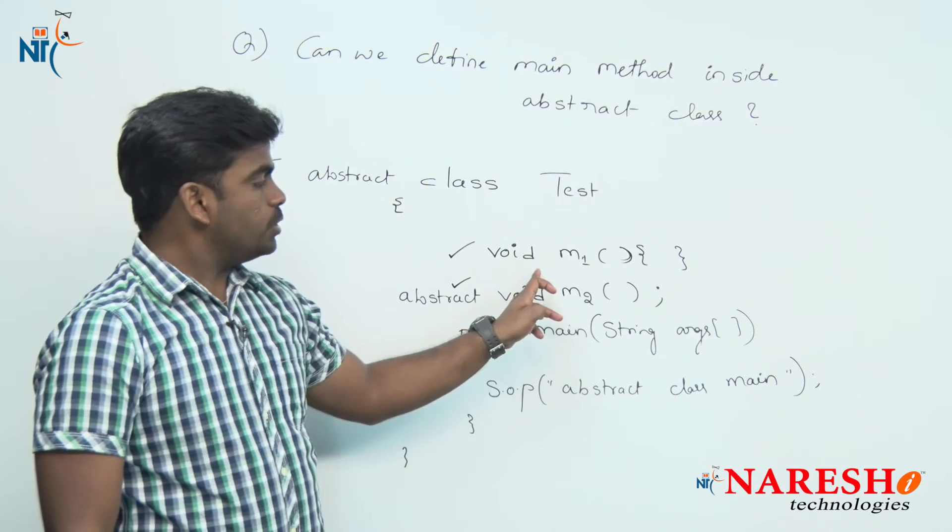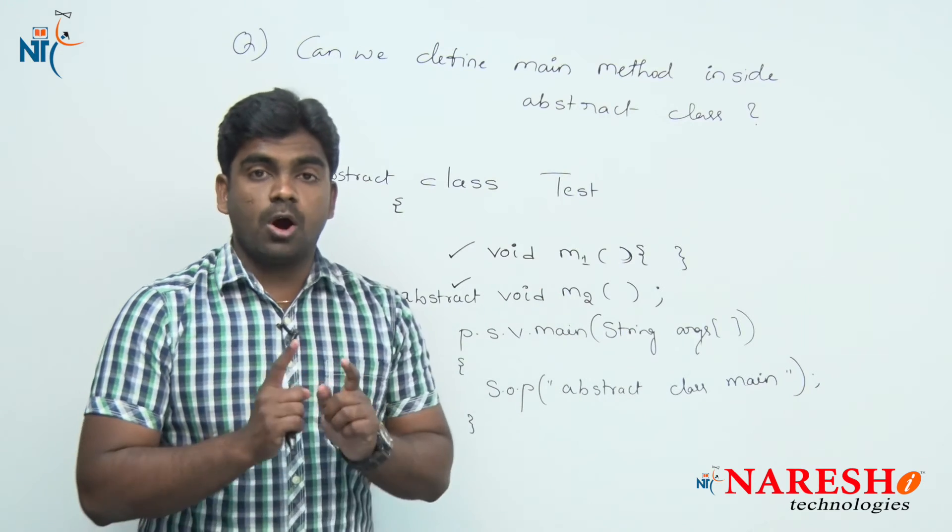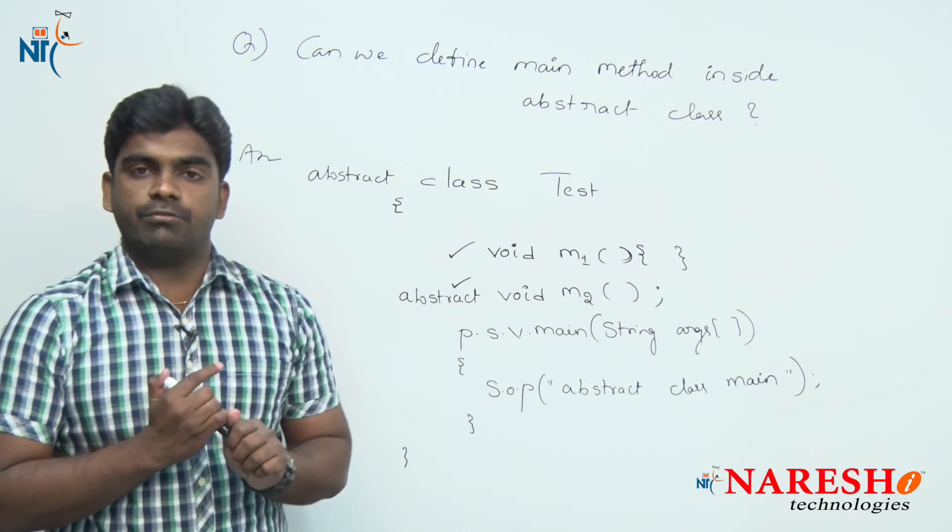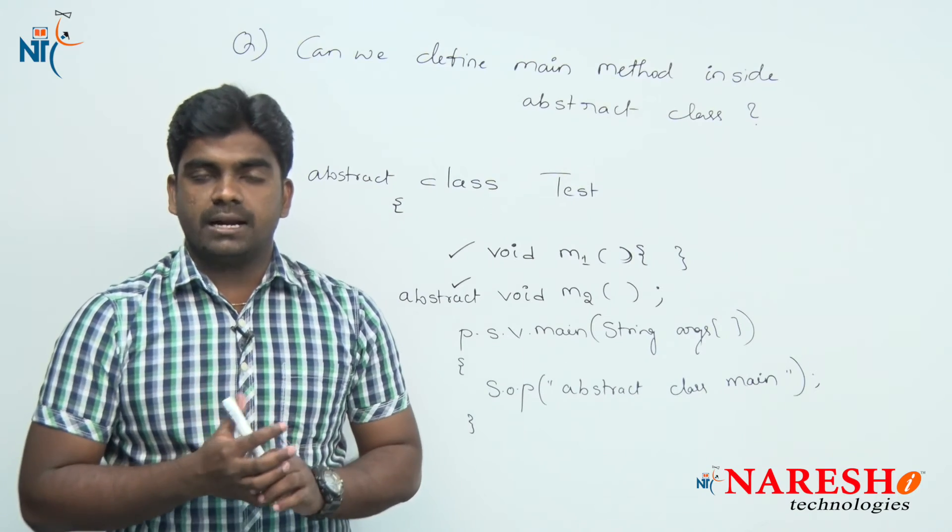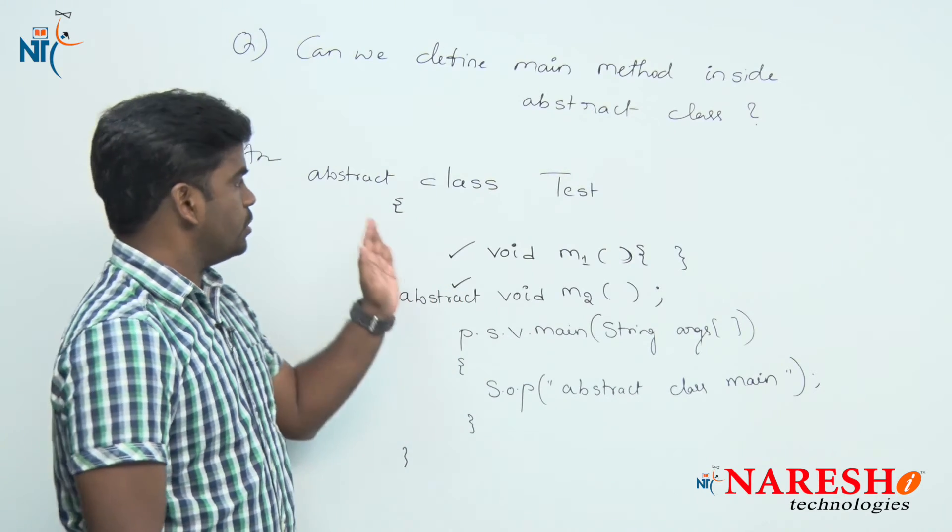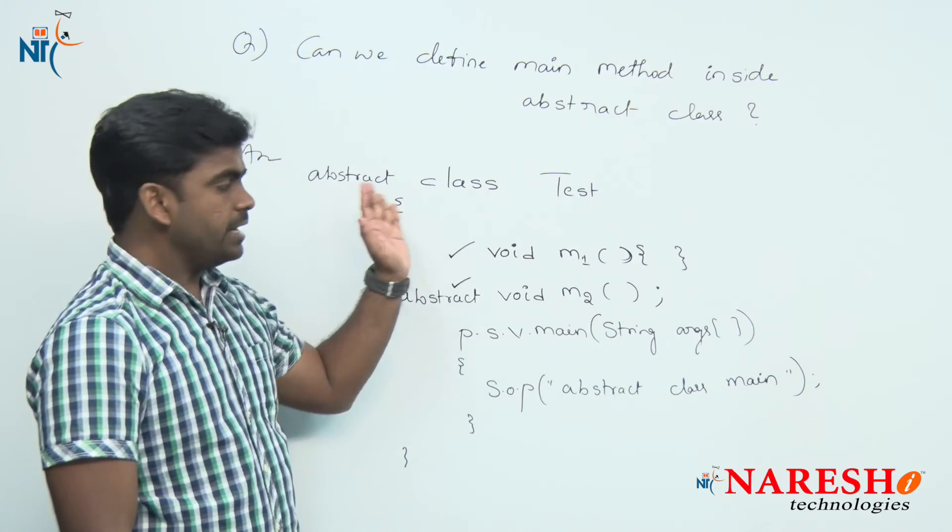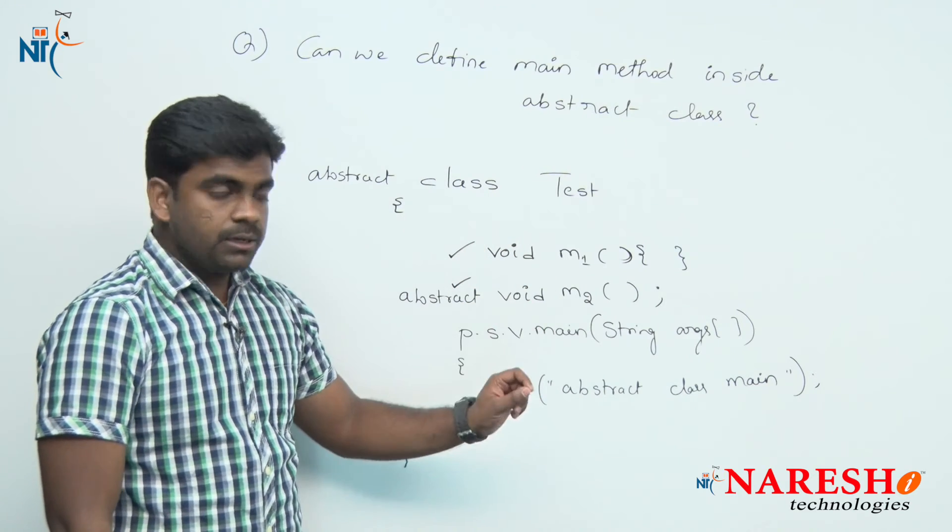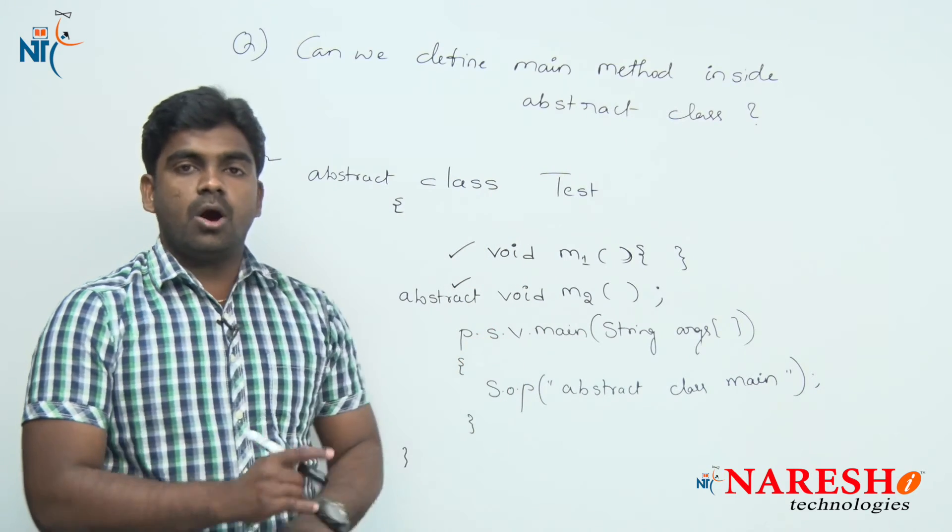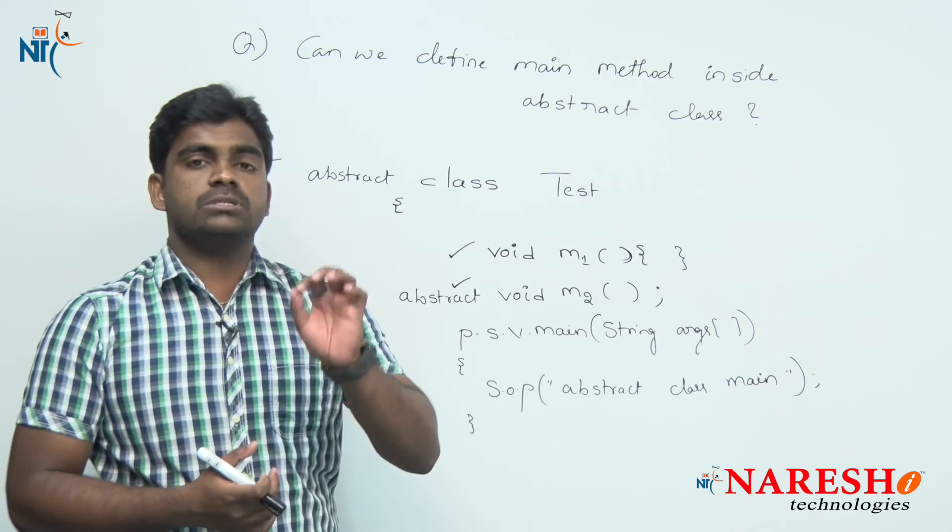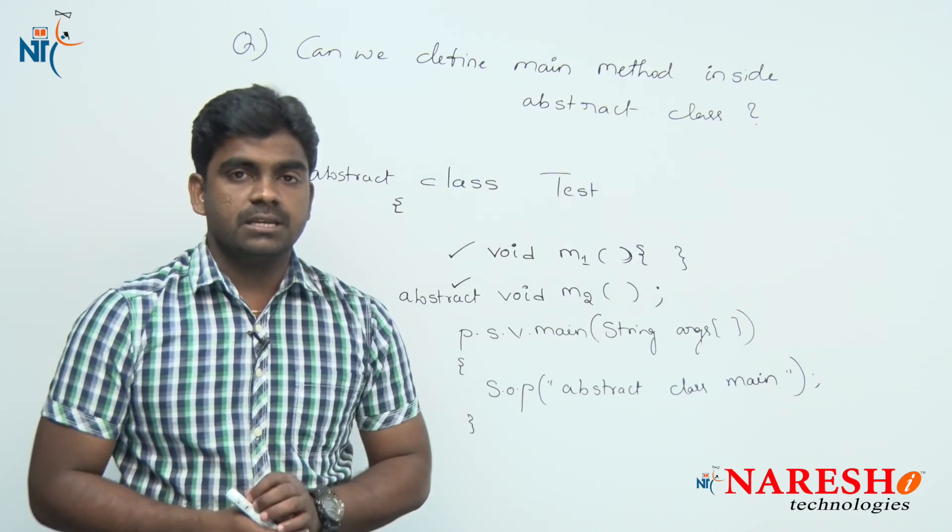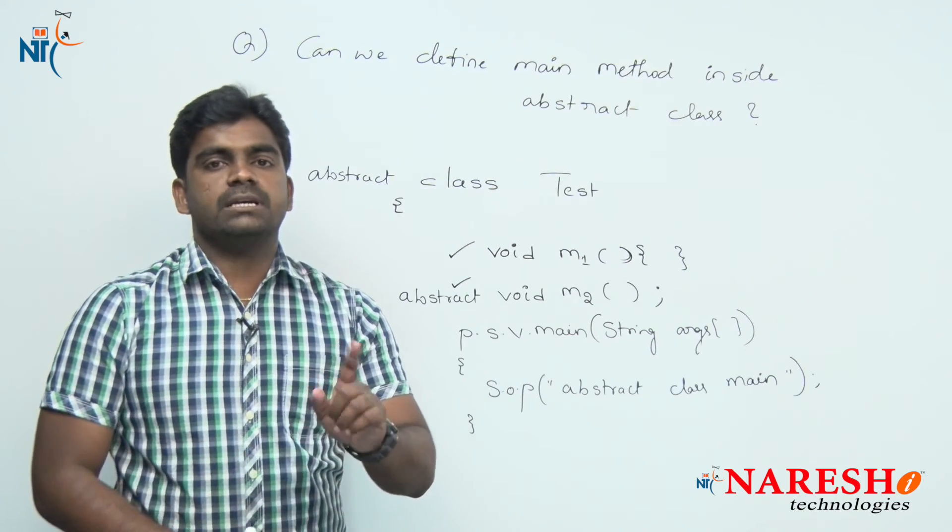To access non-static methods, object is required. But of course, we cannot create object for abstract class directly because it was not fully defined. We cannot create object, but to access the static method, object is not required. Static members of abstract class you can access directly using class name.